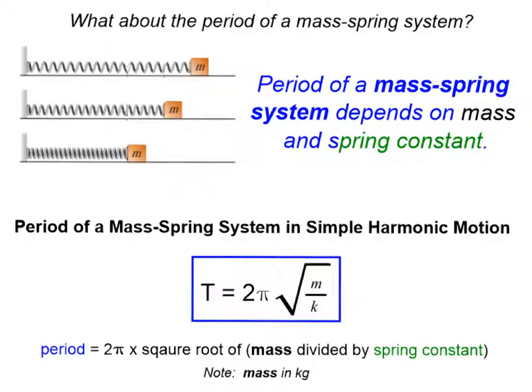So what about the period of a mass-spring system? Like we talked about in our last video, if we have a system where we have a mass on a spring and we pull it back from equilibrium or compress it and it bobs back and forth between the two. The period of a mass-spring system is going to depend on two things and they're going to be different things than for the pendulum. They will depend on mass and the spring constant. And we see that in the equation: the period equals two pi times the square root of the mass divided by the spring constant.